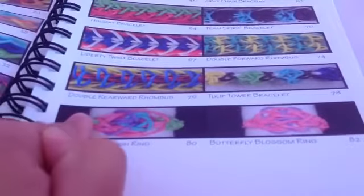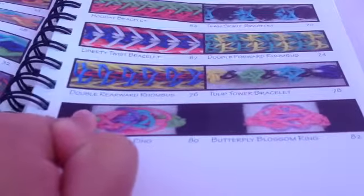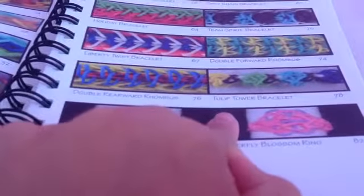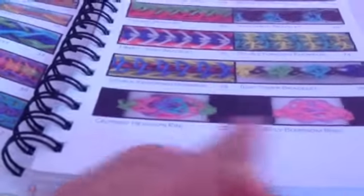The liberty twist bracelet, the double forward rhombus, the double reward rhombus, the tulip power bracelet, and the hexagon ring.